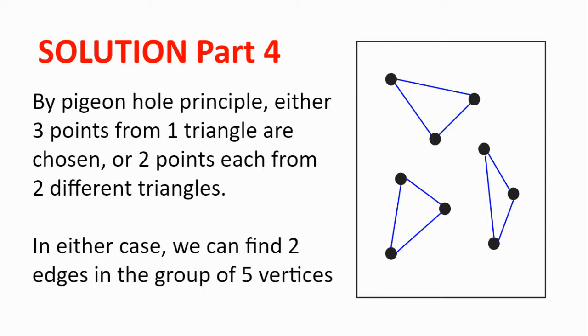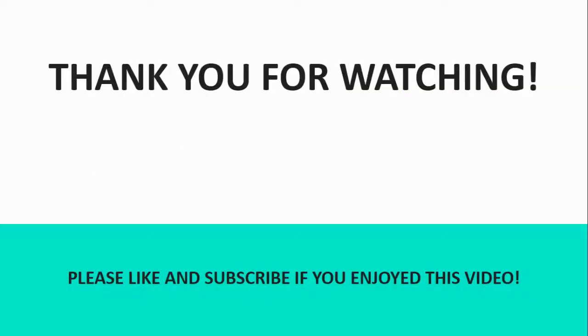Now in either case, we can find 2 edges in the group of the 5 vertices chosen, and so the minimum number of edges is 9. Thank you for watching this video, I hope you enjoyed it. Feel free to drop a comment in the comments down below, and see you next time.